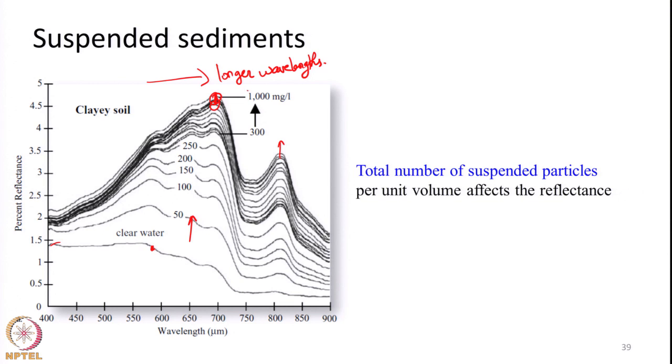That is, as concentration increases, the wavelength at which peak reflectance occurs shifts towards longer wavelengths — this is one important property. Another important thing to remember is that rather than the mass of suspended sediments per unit volume of water, what is most important is the total number of suspended particles. Some suspended sediments may be really dense, so the number of particles may be quite low, whereas for other materials the number of particles in a given mass may be very high. For example, clay is extremely fine in nature, so for the same weight, clay will have a large number of particles in comparison to sand. The number of particles increasing the reflectance matters more than the weight — higher the number of particles present in the water, higher will be the reflectance.